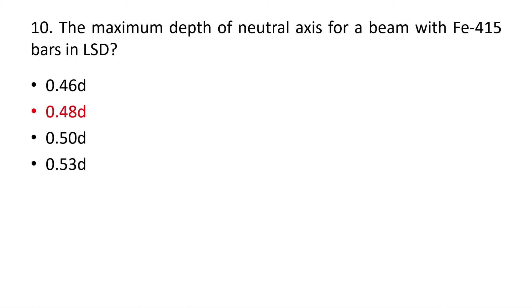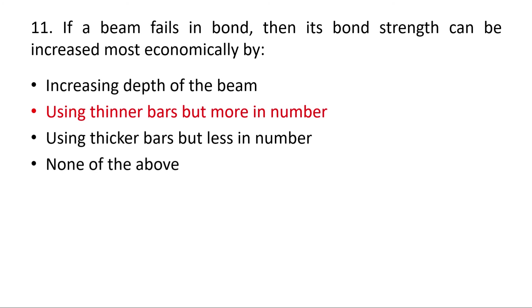Question 11: If a beam fails in bond, its bond strength can be increased most economically by using more numbers of thinner bars. Using more thinner bars reduces the required development length and improves the bond strength.